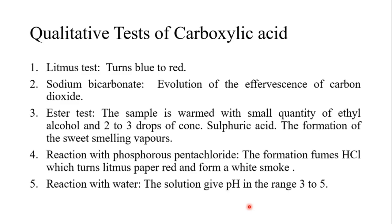The fourth test is the reaction with phosphorus pentachloride. We take some amount of carboxylic acid and add some amount of phosphorus pentachloride. Then we observe the formation of fumes of HCl, which turns blue litmus paper to red and forms white smoke. Any carboxylic acid reacting with phosphorus pentachloride causes litmus paper to turn blue to red, and white smoke is also formed.